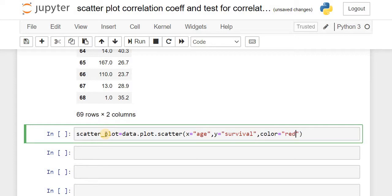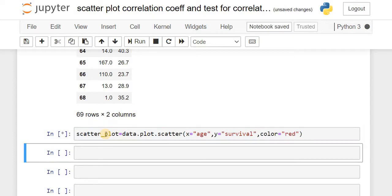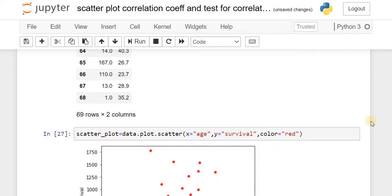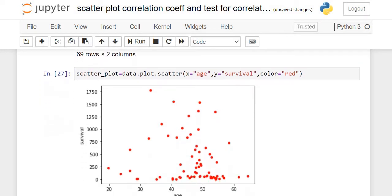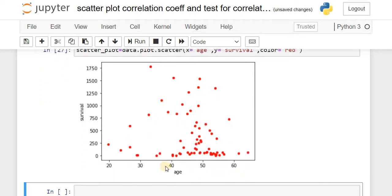So this scatter plot is in front of you, wherein survival is indicated on the y-axis and age is on the x-axis.